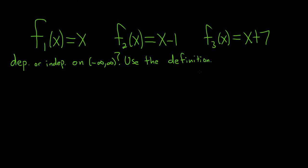So what definition? Well, the definition of dependence. The definition of dependence says that if you have a linear combination of these functions and it's equal to zero, and not all of the coefficients are zero, then the answer is dependent.